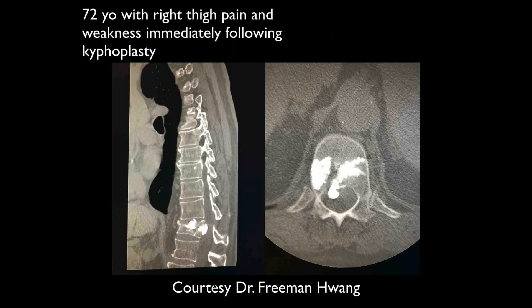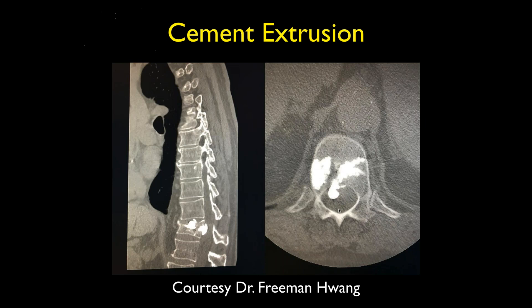Shiv: 72-year-old with right thigh pain and weakness immediately following kyphoplasty. One of the lumbar vertebral bodies — looks like T12 — was fractured and they tried repairing it with cement. It looks like the cement went posteriorly into the spinal canal. What's happened here is cement extrusion that has come back in and is compressing the conus.